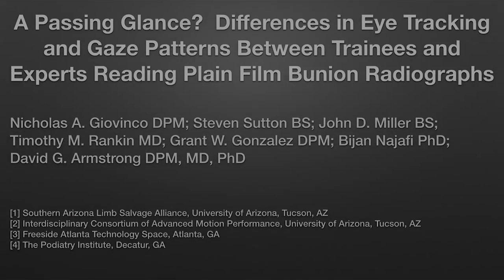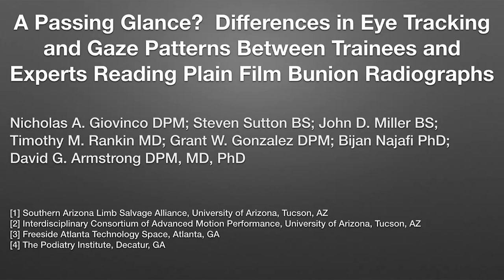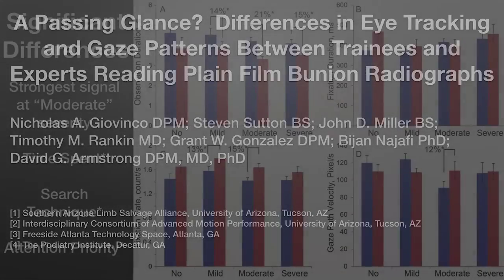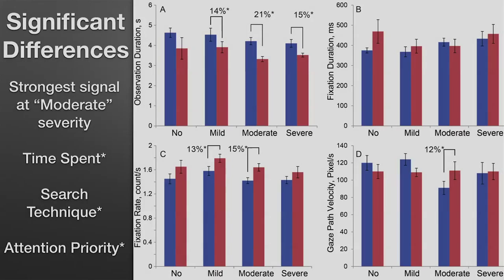The results of this study demonstrate the significant differences between the advanced and novice groups. The strongest differences are seen with the bunion images which were rated as moderately severe. Advanced surgeons spent less time evaluating radiographs and demonstrated characteristically efficient gaze behavior. Additionally, advanced surgeons had more rapid saccade velocities yet higher fixation durations, suggesting that they acquired their target radiographic features at a faster rate but devoted more attention to these targets in order to make their assessment.